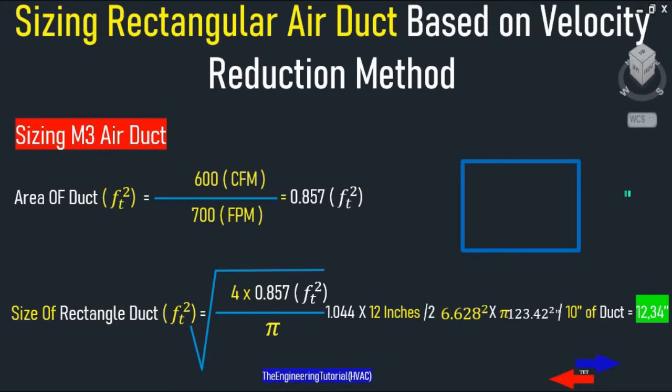Next, 600 CFM divided by 700 FPM, square root of 4 times 0.857 divided by pi, times 12 inches divided by 2, squared, times pi.